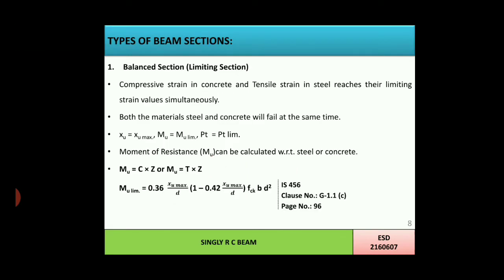In a balanced section, compressive strain in concrete and tensile strain in steel reach the limiting strain values simultaneously — both steel and concrete will fail at the same time. Conditions for a balanced section: XU = XU max; Mu = Mu limit; pt = pt limit. Moment of resistance can be calculated with respect to steel or concrete, that is C×Z or T×Z.